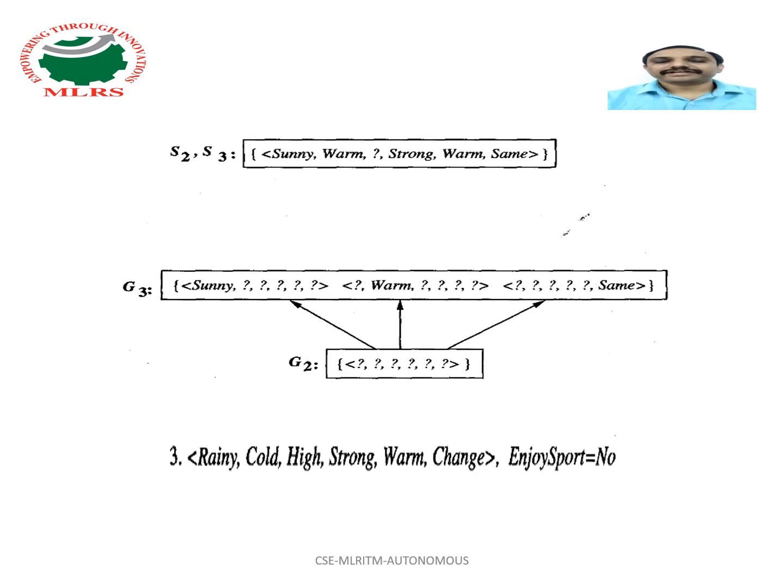As illustrated by these first two steps, positive training examples may force the S boundary of the version space to become increasingly general.